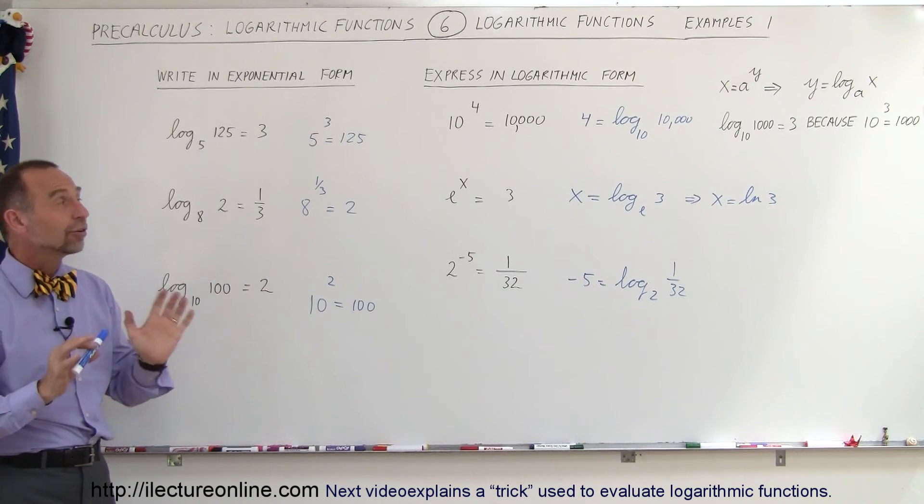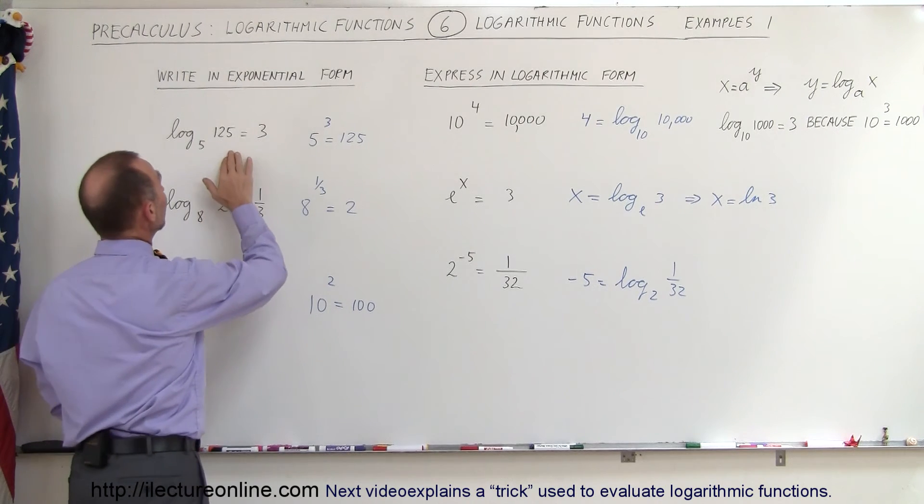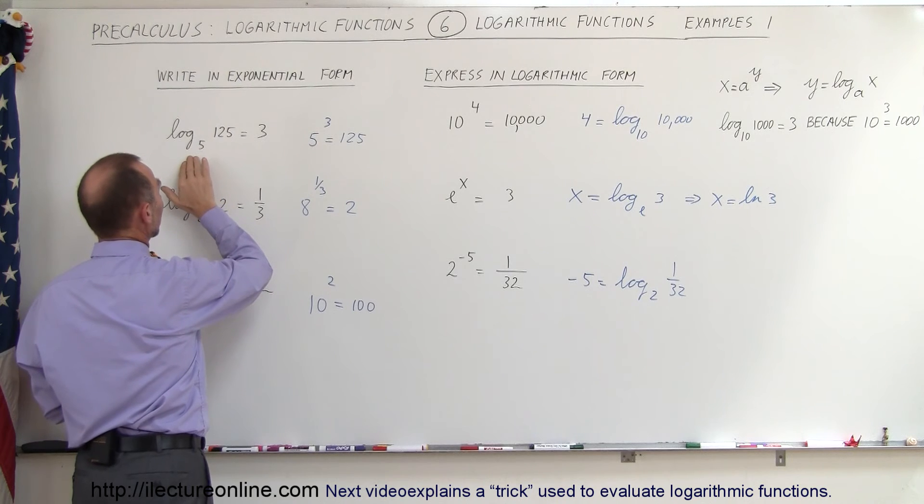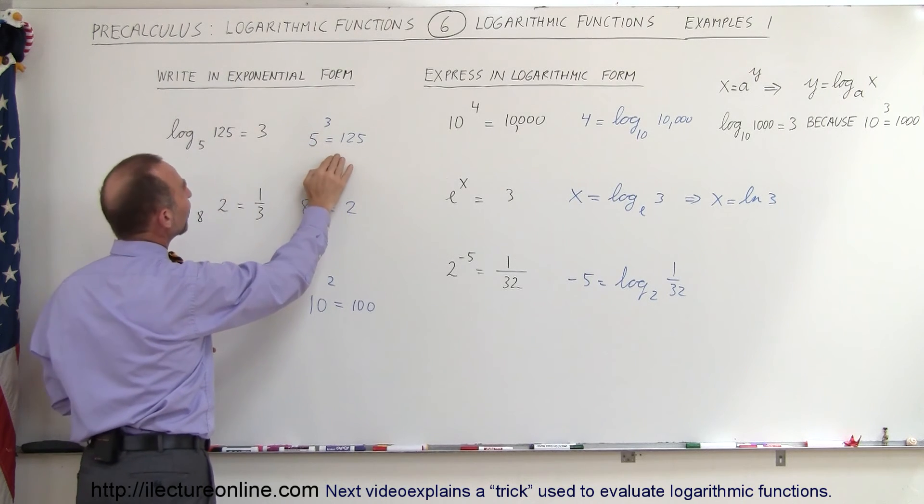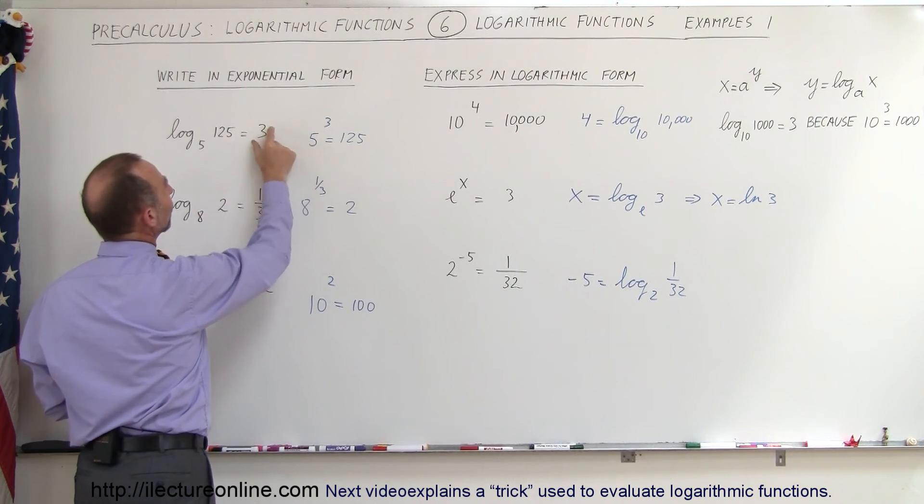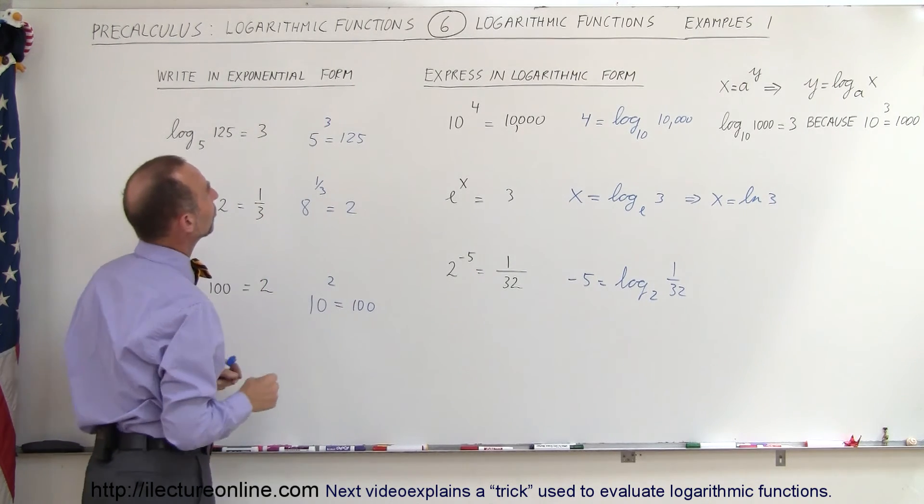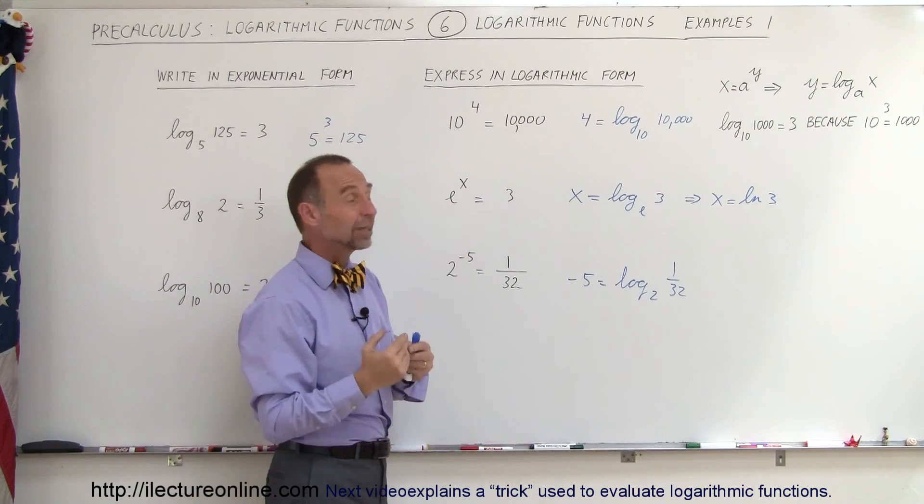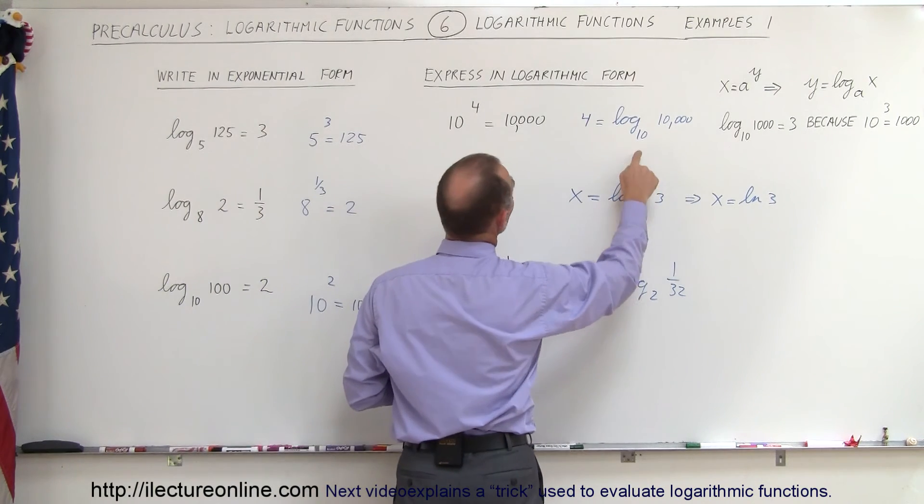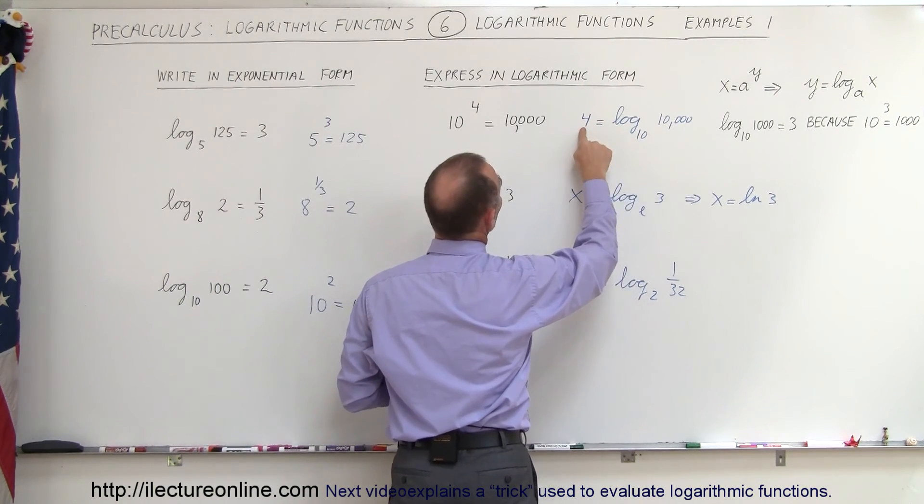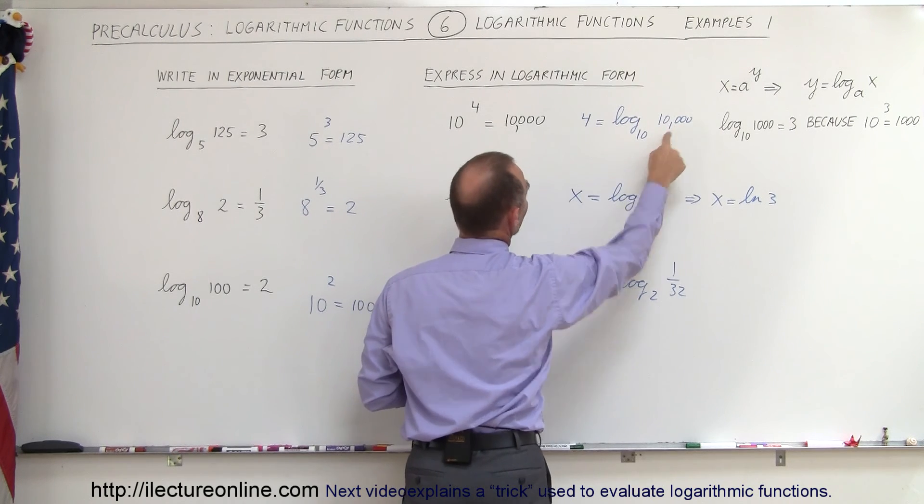Again, follow the specific rule. So here we see when we go from logarithmic form to exponential form, we take the base, raise it to this number, and that's equal to 125. Over there it's exactly in reverse. So if you want to check to see if we did it correctly, we take the base, raise it to this number, and we should get equal to that.